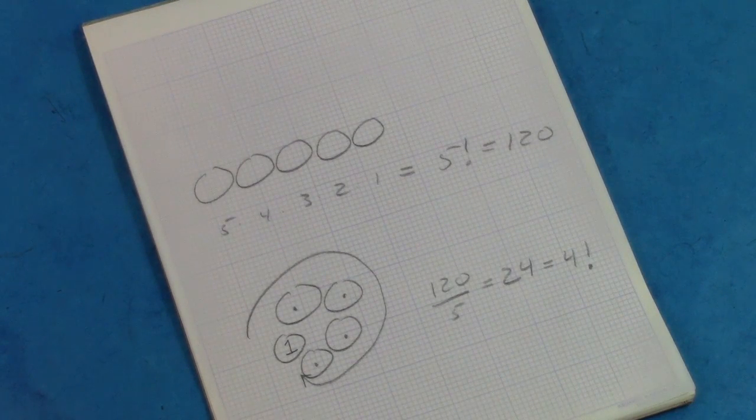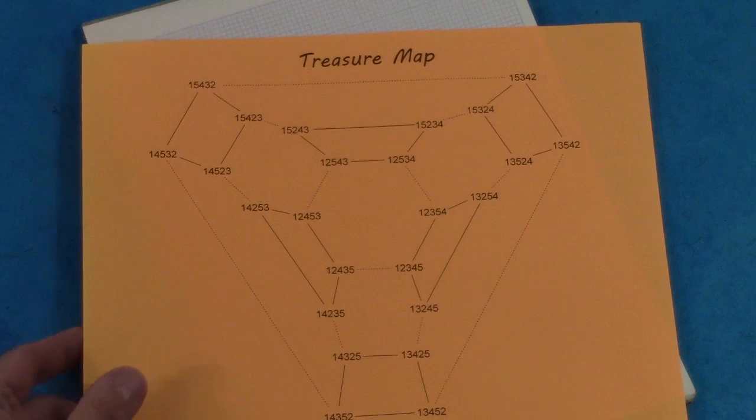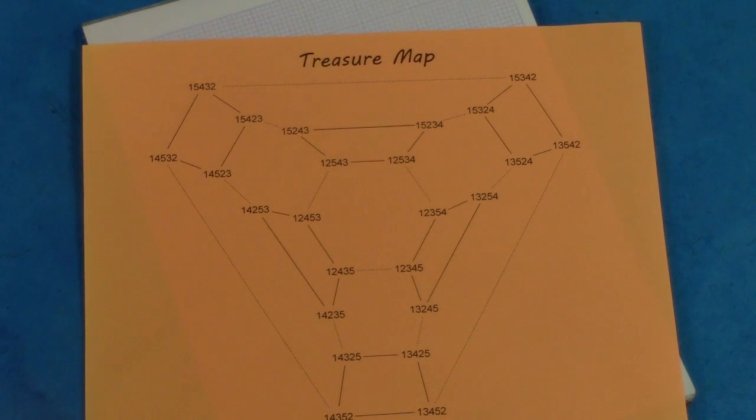It turns out we can create a map of these 24 possibilities in a lovely way. Each group of numbers here represents a possible cycle. I'm listing color number one first, then there are 24 ways to mix up the remaining four colors.